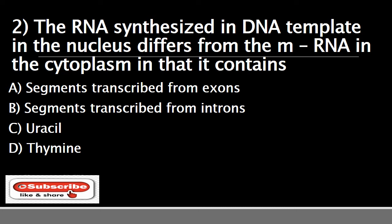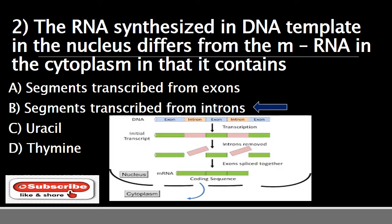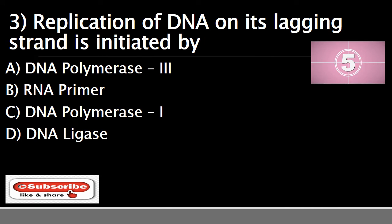The correct answer is B) segments transcribed from introns. RNA is synthesized using DNA as a template in the nucleus. When RNA leaves the nucleus and enters the cytoplasm, the 5-prime cap and introns are removed, and a poly-A tail of multiple adenosines is added — this is known as mRNA processing. Therefore the mRNA contains only the exons, which are the coding sequences.